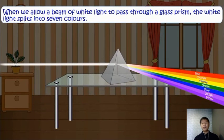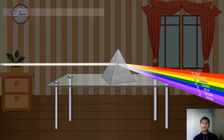What are the seven colors? We have violet, indigo, blue, green, yellow, orange, and red. This is what we call ROYGBIV.